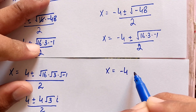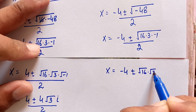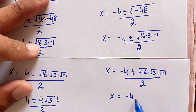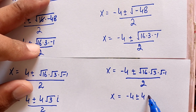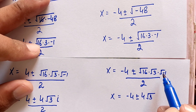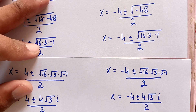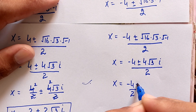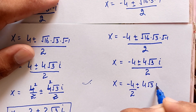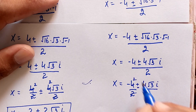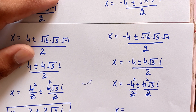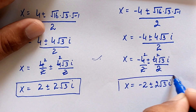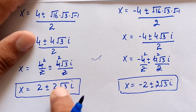Continuing, x equals minus 4 plus or minus (square root of 16 times square root of 3 times square root of minus 1), divided by 2. Since square root of 16 equals 4 and square root of minus 1 equals i, this becomes x equals minus 4 divided by 2 plus or minus (4 times square root of 3 times i) divided by 2, giving x equals minus 2 plus or minus 2 square root of 3 i. This is the second complex solution.